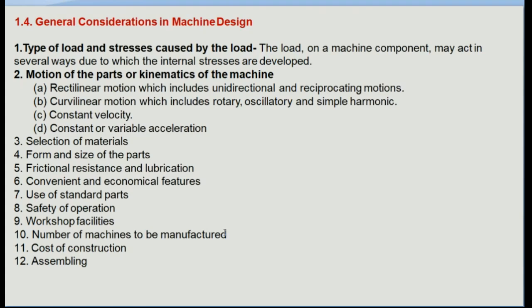The cost of construction is also a key consideration. Manufacturing a part by one set of methods may be costlier than another. An engineer must keep cost at the lowest and strength at the highest. Finally, assembling — after producing various parts, they must be assembled to make a meaningful machine or mechanism.